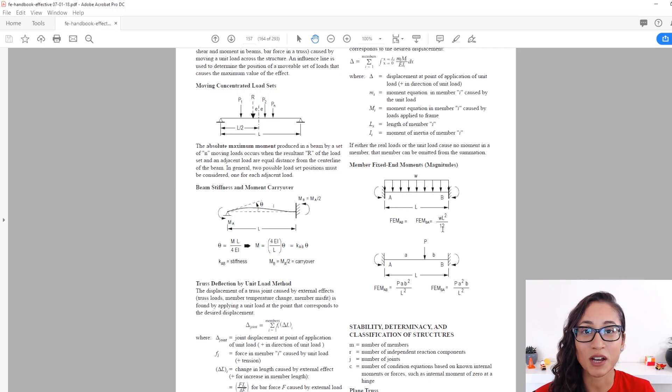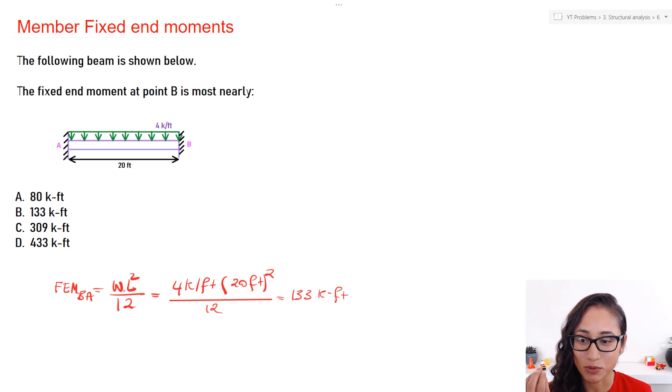Let's write the equation down and solve this problem. So, this is the equation. The distributed load is equal to 4 kips per foot. Here, we have 20 feet squared and then we're going to divide it by 12. If you plug in these numbers, you're going to get 133 kips foot.